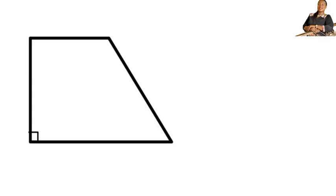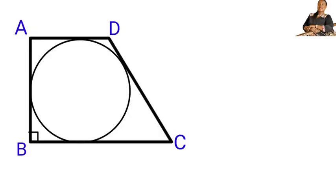We are given a trapezoid ABCD and a circle with center O inscribed inside the trapezoid in such a way that it touches the trapezoid from the inside at four points: E, F, G, and H.